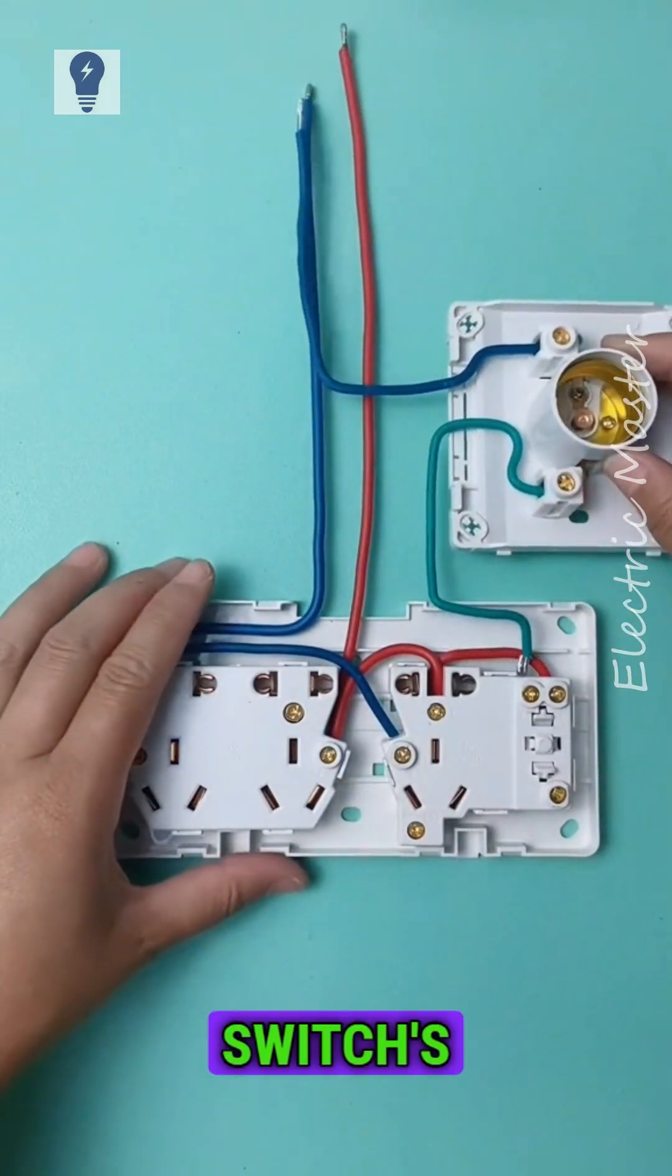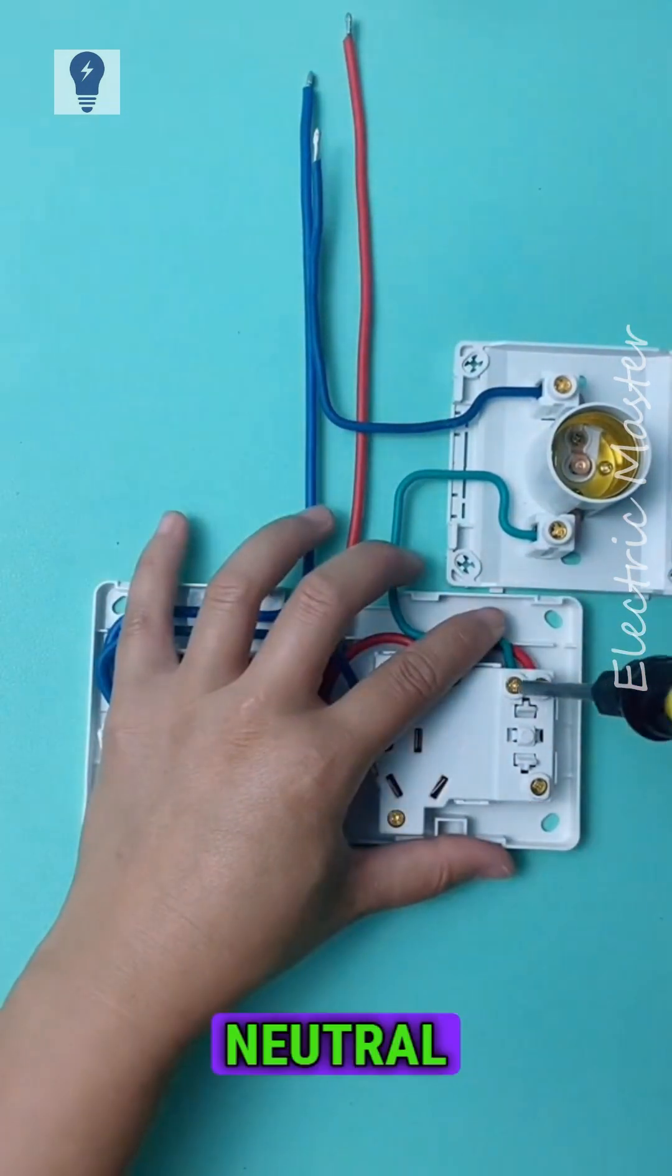The green wire goes to the switch's L-1 for lamp control, while the blue wire is the neutral near the power source.